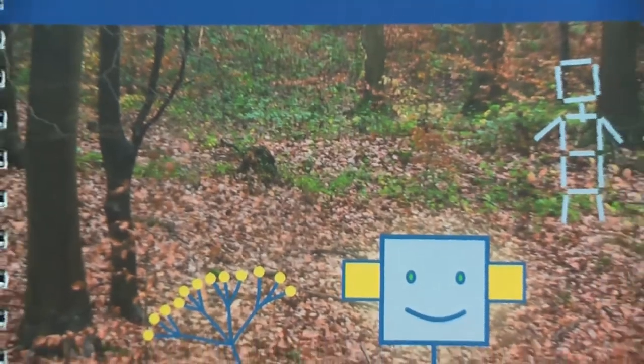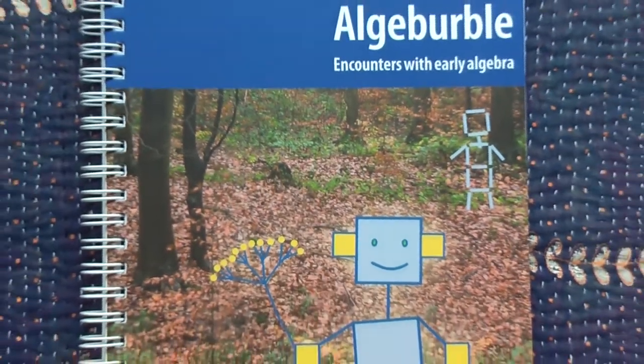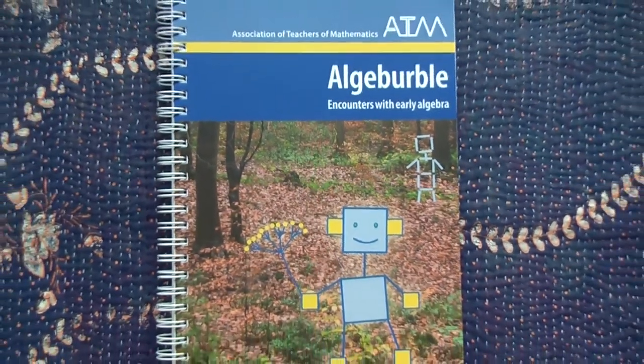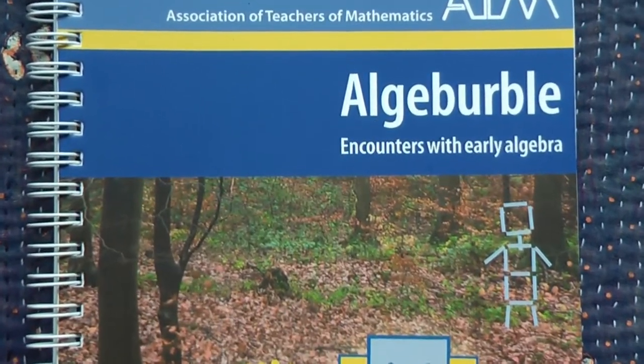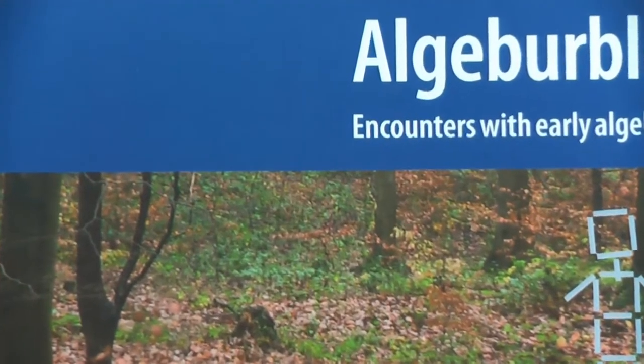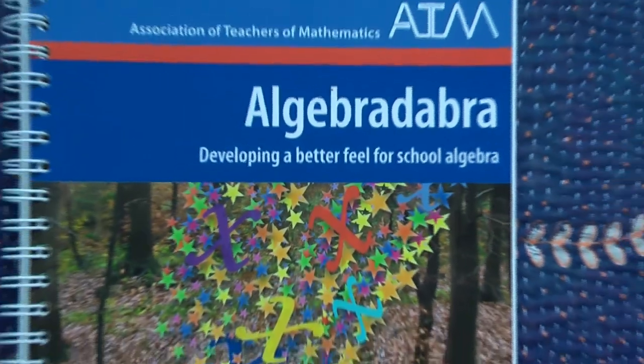Algebrable is a book of algebra tasks that can be used with upper primary school pupils, 9 to 11 year olds, though many of the tasks will also challenge secondary school students. As such, it could be said to overlap in scope with my earlier book Algebra Dabra, also published by ATM.